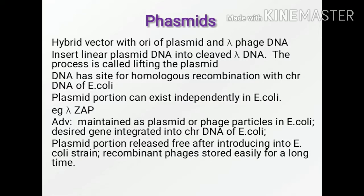The phasmid has sites for homologous recombination with the chromosomal DNA of E. coli. So it can either integrate into the E. coli or it can exist independently as the plasmid in E. coli.